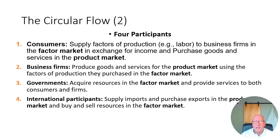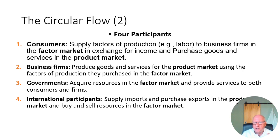Business firms produce goods and services for the product market — the final goods and services market — and they use goods and services that they purchased in the factor market. Business firms are also buyers, or consumers in quote marks. They are consumers of labor, capital, natural resources, land resources, or entrepreneurship. They consume those things by buying them and bringing them to their factory, using them up, and then producing the good for the product market.